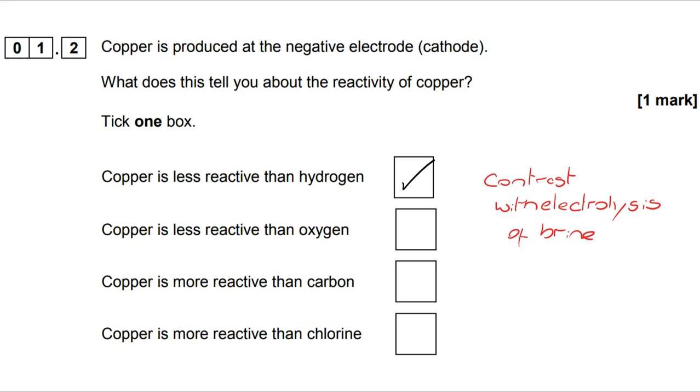The easy way to remember this is to contrast it with the electrolysis of brine, which is sodium chloride in water. And in that, we don't make the metal, we don't make sodium. Instead, we make hydrogen.